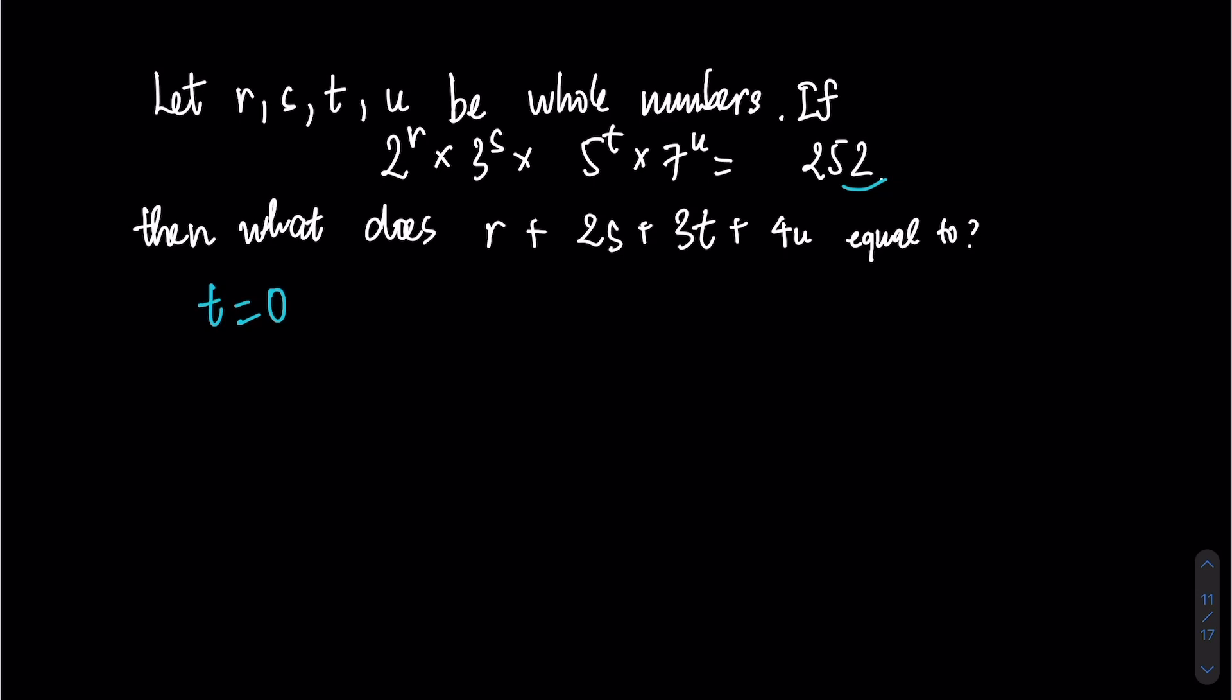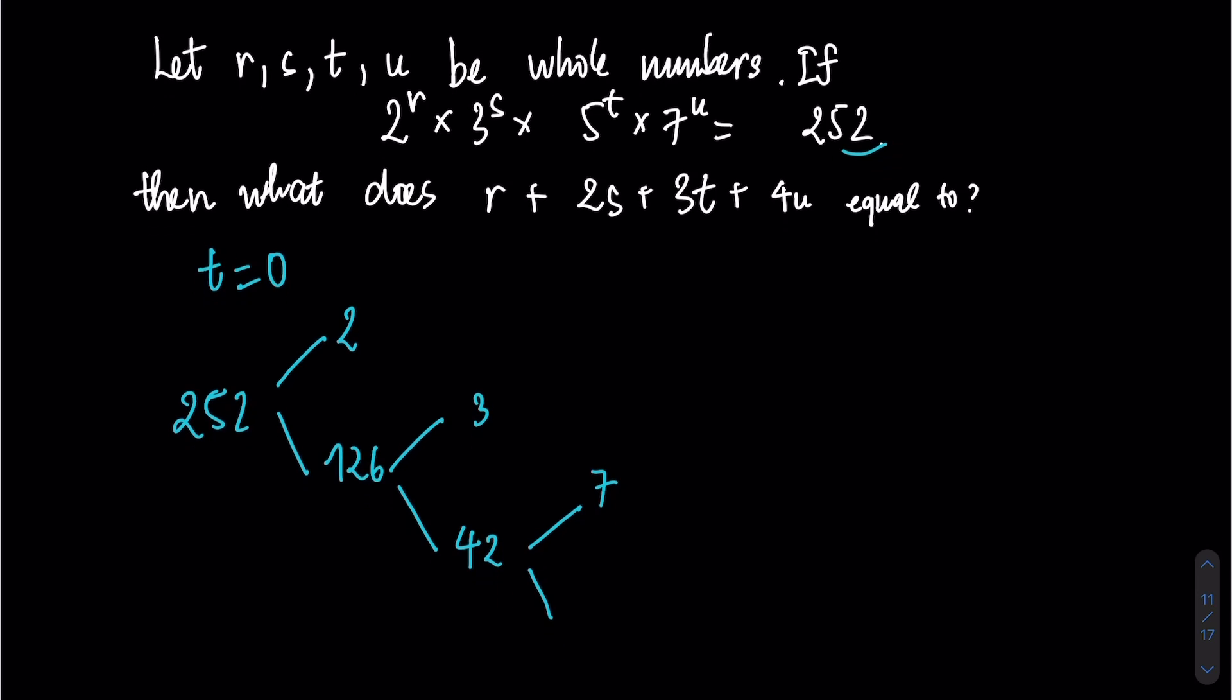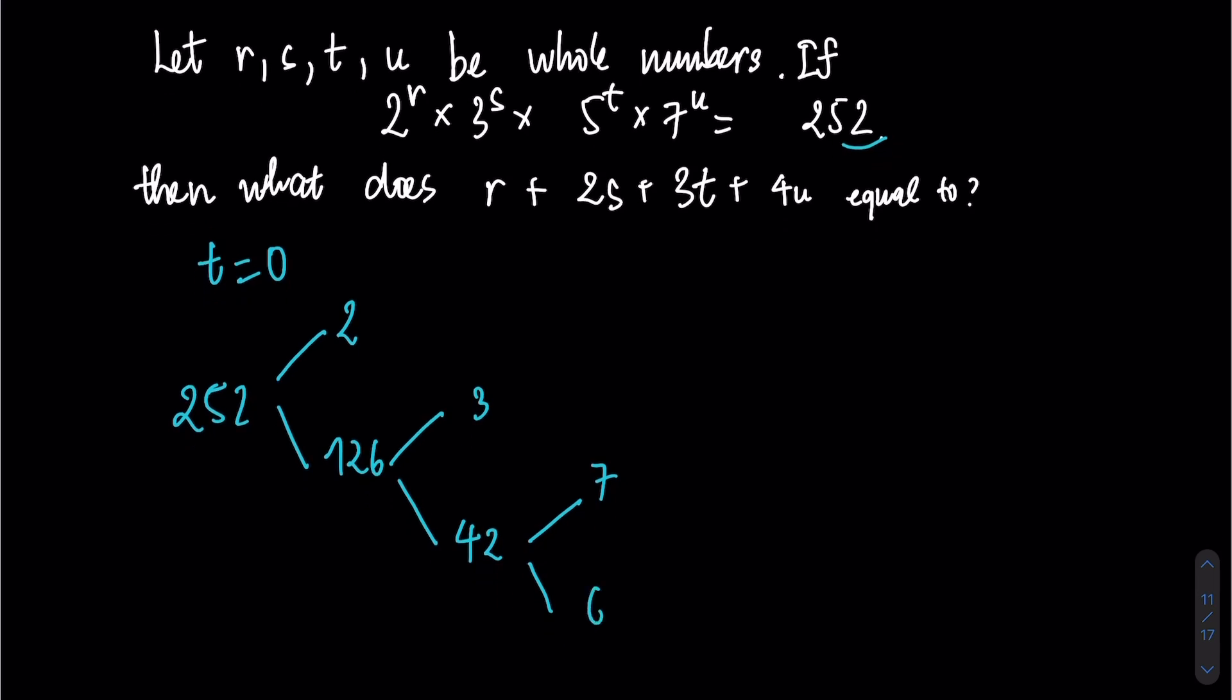Now we need to do prime factorization for number 252. We have 252 divided by 2 get 126. Then now 126 divided by 3 get 42. Continue, we get 42 divided by 7 is 6, and 6 can be written as 3 times 2.